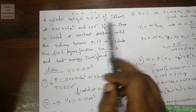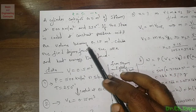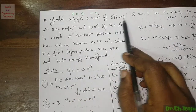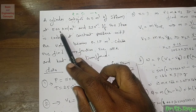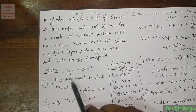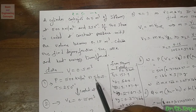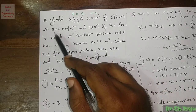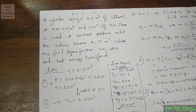Another example on the constant pressure process: a cylinder contains 0.5 m³ of steam at 500 kN/m² and 250°C. The steam is cooled at constant pressure until the volume becomes 0.15 m³. Calculate the final dryness fraction, work done, and heat energy transferred. Converting: 500 kN/m² = 5 bar. At 5 bar, saturation temperature is 151.9°C, so 250°C is superheated.